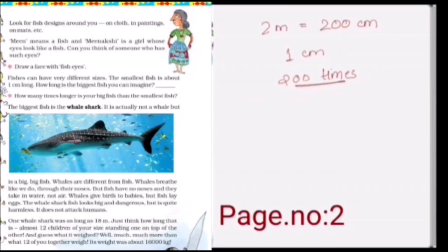Now here it is written, the biggest fish in the world is whale shark. It is actually not a whale—you all must have heard about whales—but it is a big fish. When we talk about whales, they are different from fish; they are actually mammals. One whale shark was as long as 18 meters. Just think how long that is—almost 12 children of your size standing one on top of the other. And guess what it weighed? Much more than what 12 of you together weigh. It weighed about 16,000 kg.